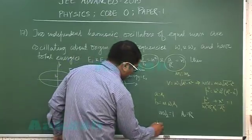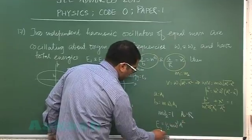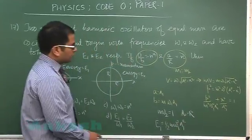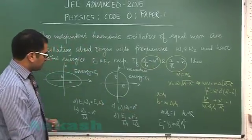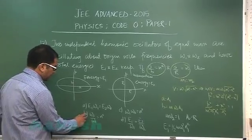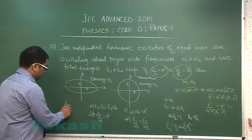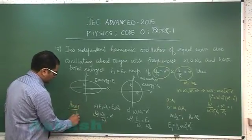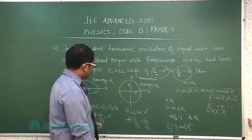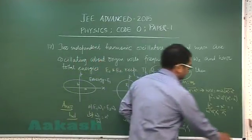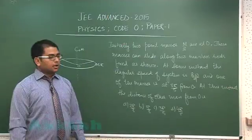We also additionally know that energy is one half m omega square a square. So if it is 1, that would be omega 1 a1. We have all these parameters, and now it is a simple replacement of the value, and you will get option number b and option number d to be correct. So question number 17 has option b and d as the correct answer.